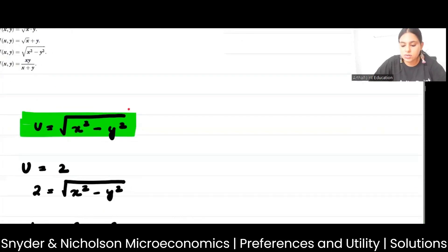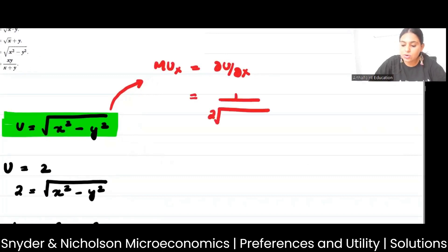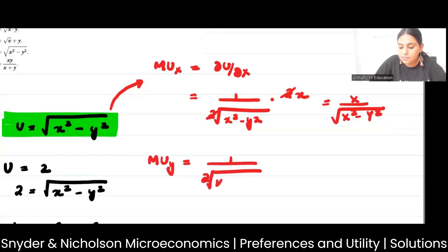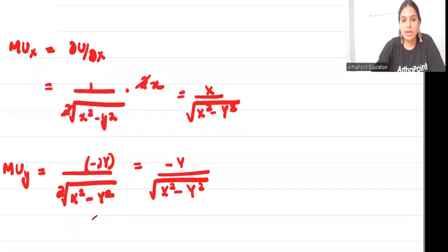And suppose I asked you to find two things. What is the marginal utility of x? How utility changes as x changes. When you differentiate this with respect to x, you will get 1 by 2 square root of x squared minus y squared into 2x. So you will get x upon square root of x squared minus y squared. If I ask you to find marginal utility of y, it will be 1 by 2 square root of x squared minus y squared into minus 2y. So it will be minus y upon square root of x squared minus y squared. So what would be your MRS? MRS will be mu x by mu y. It will be minus x by y.